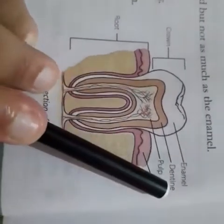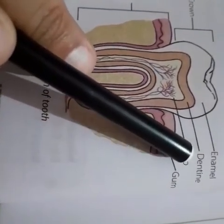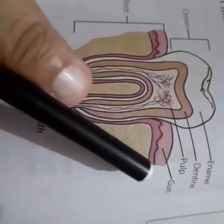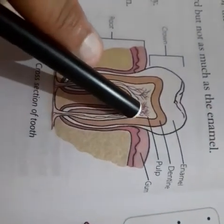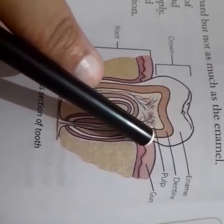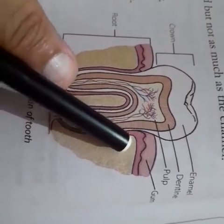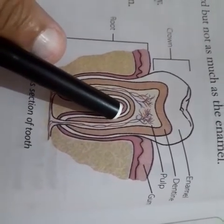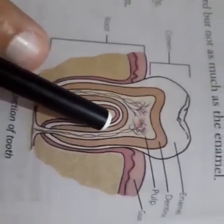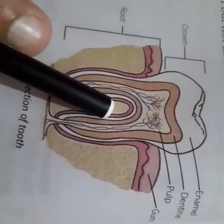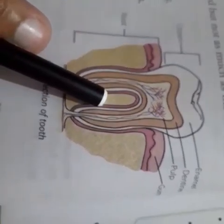Enamel is the hardest substance in the human body. The second part is dentine — dentine lies under the enamel and is hard, but not as hard as enamel. Dentine protects the innermost part of the tooth called the pulp, which is soft and contains nerve endings and the blood supply. The nerve endings inside the pulp send messages to the brain about any sensation. The nerves are connected to the gum through a hole in the roots, and the gums are pink-colored soft tissue surrounding the teeth.